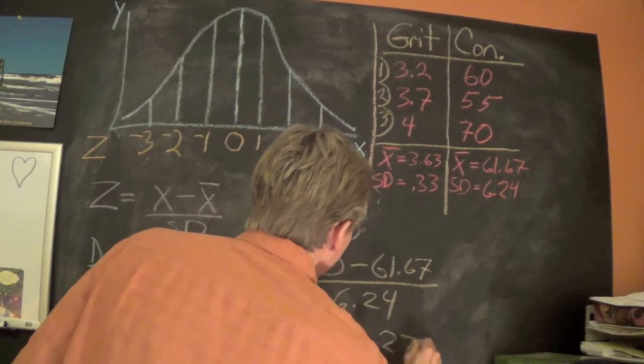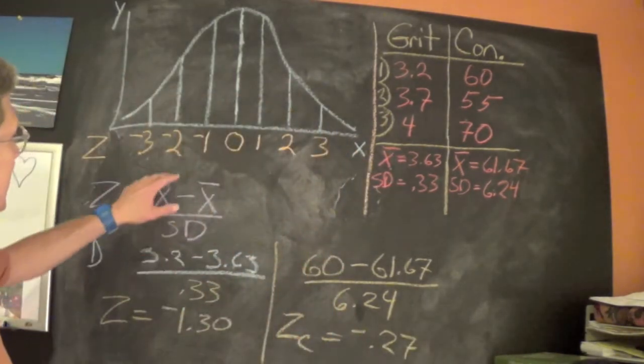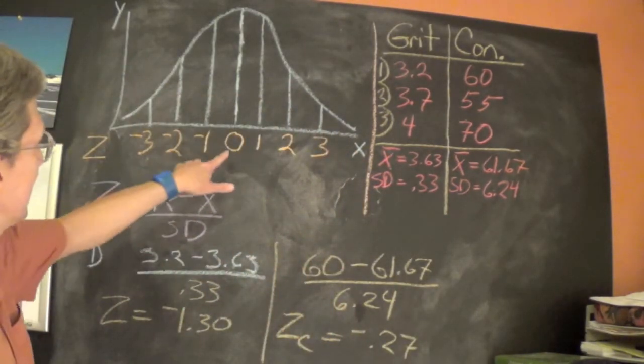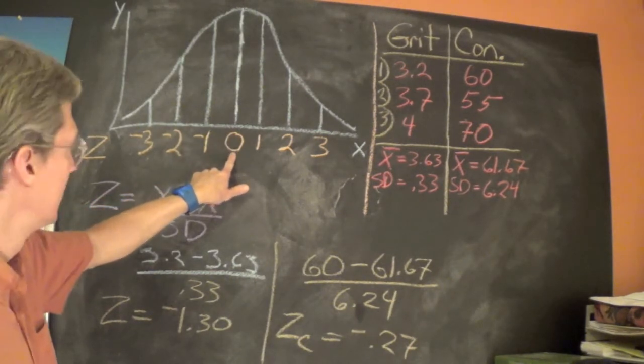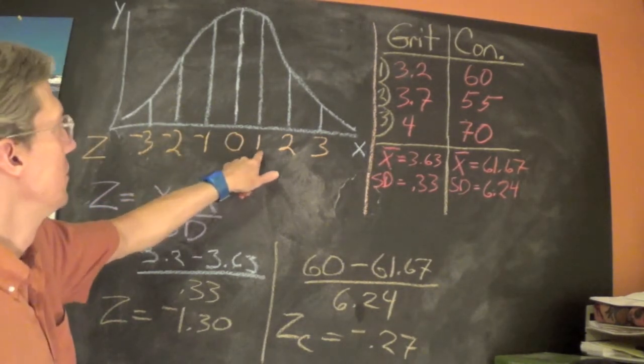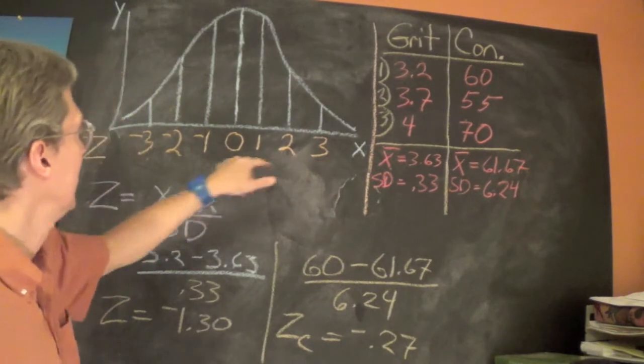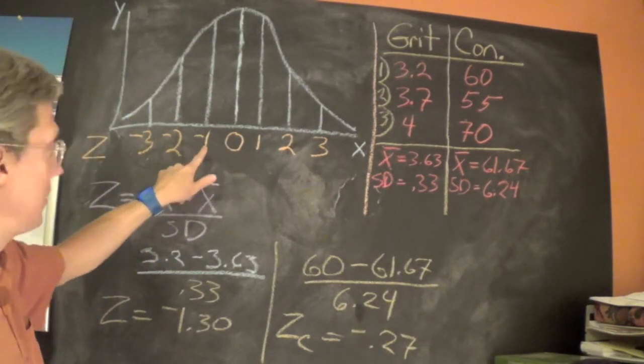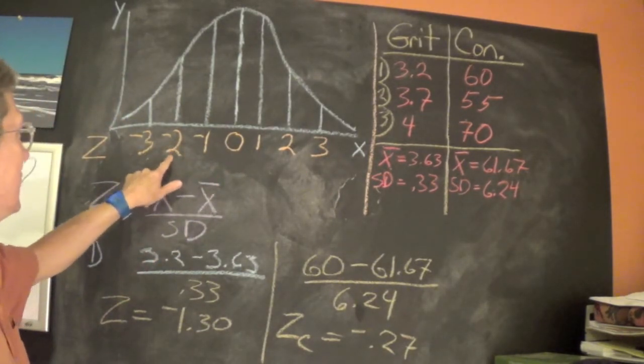So if we were to come here, the nice property of the z-scale is that the mean is always going to be 0, and then one standard deviation above the mean, two, three, one standard deviation below the mean, two standard deviations below the mean, and then three standard deviations below the mean.